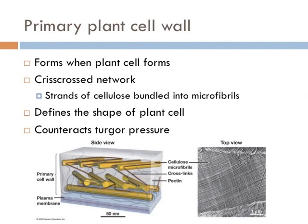When new plant cells form, they secrete a fiber composite called a primary cell wall. This wall is composed of long strands of cellulose bundled into microfibrils that form a criss-crossed network. The network is filled with hydrophilic gelatinous polysaccharides known as pectin, which keep the cell wall moist. You may know pectin as the thing that makes jelly gelatinous. The primary cell wall defines the shape of the plant cell and counteracts the turgor pressure it experiences.